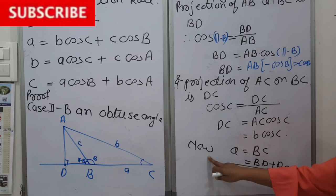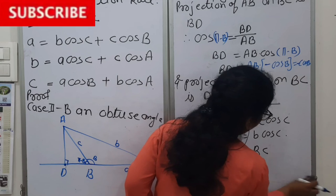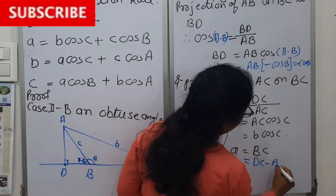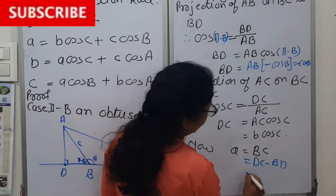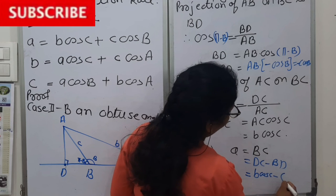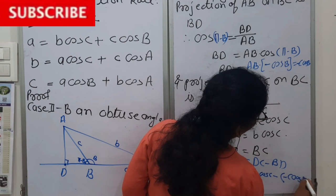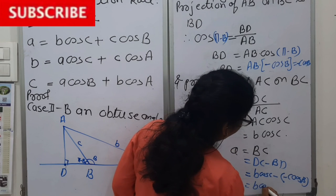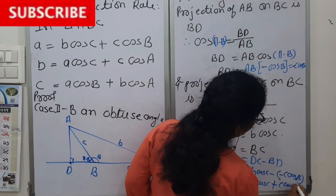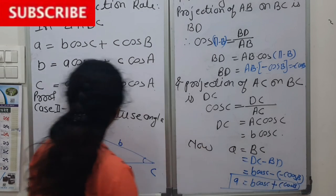Now again we want a. A is BC. But here BC is DC minus BD. And DC we have found as b cos C, and BD we have found as minus c cos B. It means b cos C minus minus c cos B, which equals b cos C plus c cos B. So this is our a for case 2.